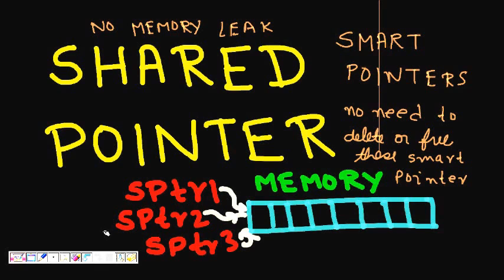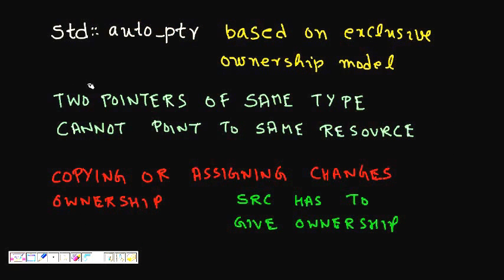As the name suggests, shared pointer means many pointers are pointing to the same memory. Let's see why shared pointer came into existence. We saw that auto pointer is based on the concept of exclusive ownership of memory — it owns the resource exclusively and cannot allow any new resource to point to it.